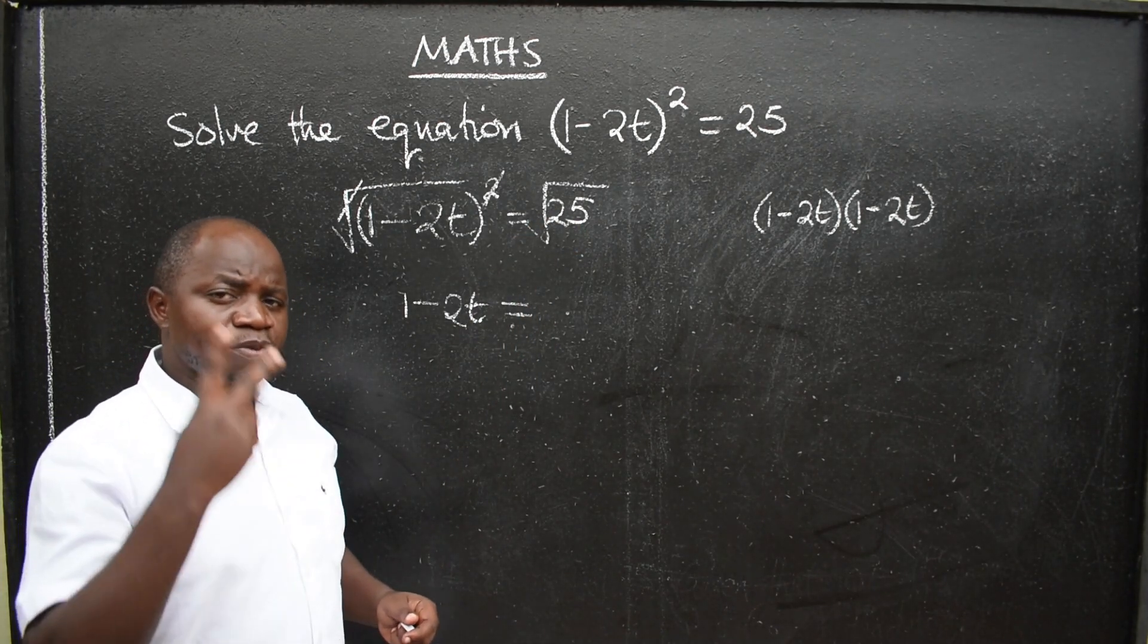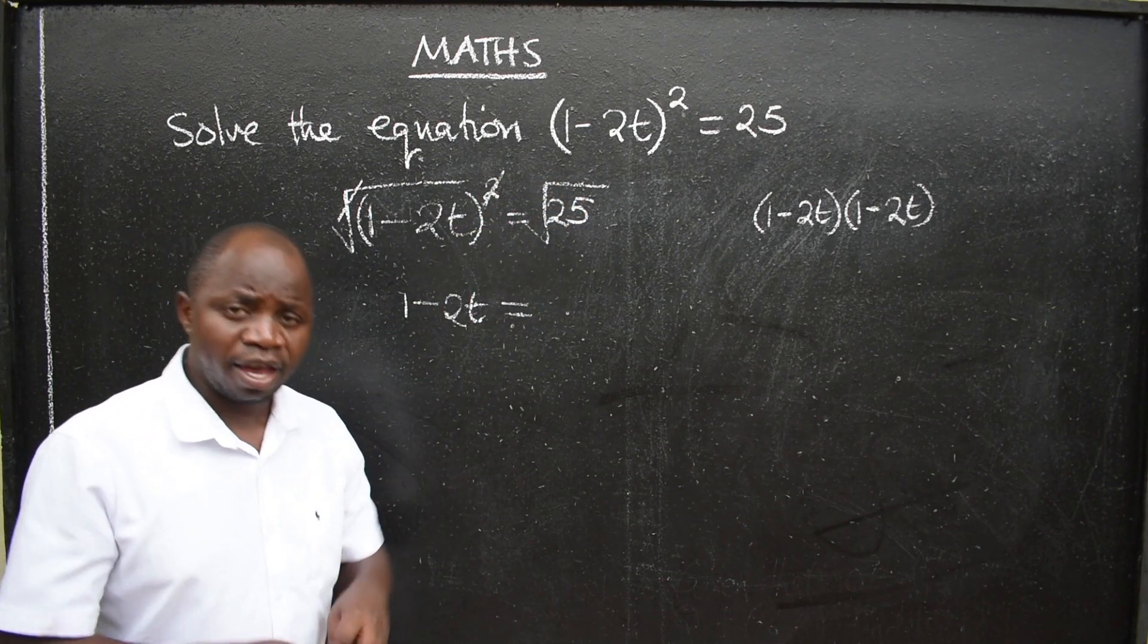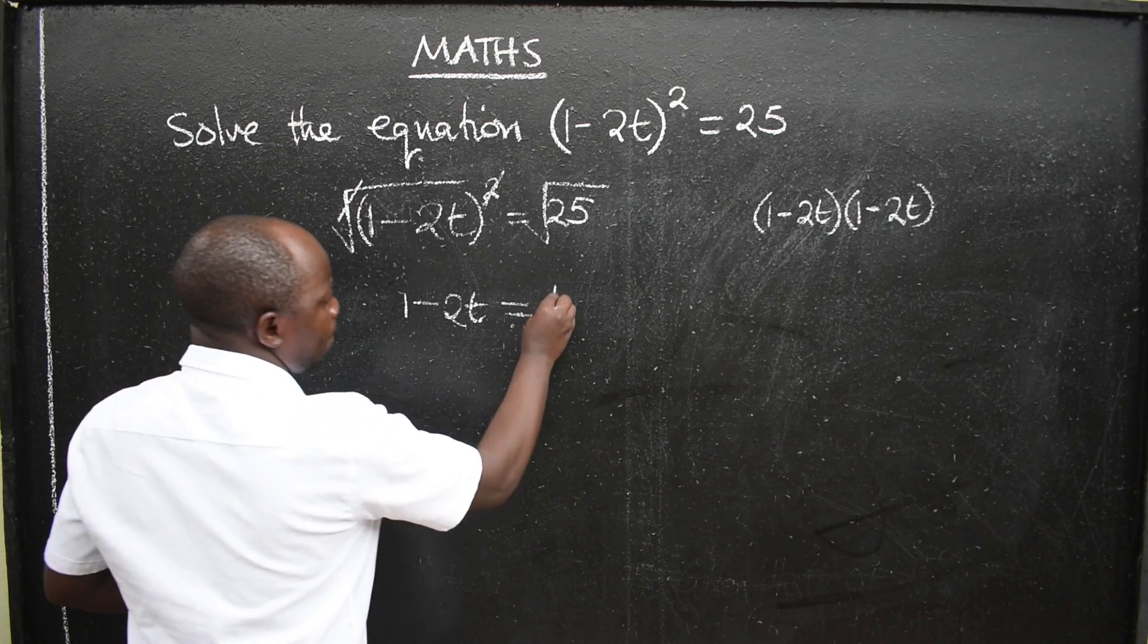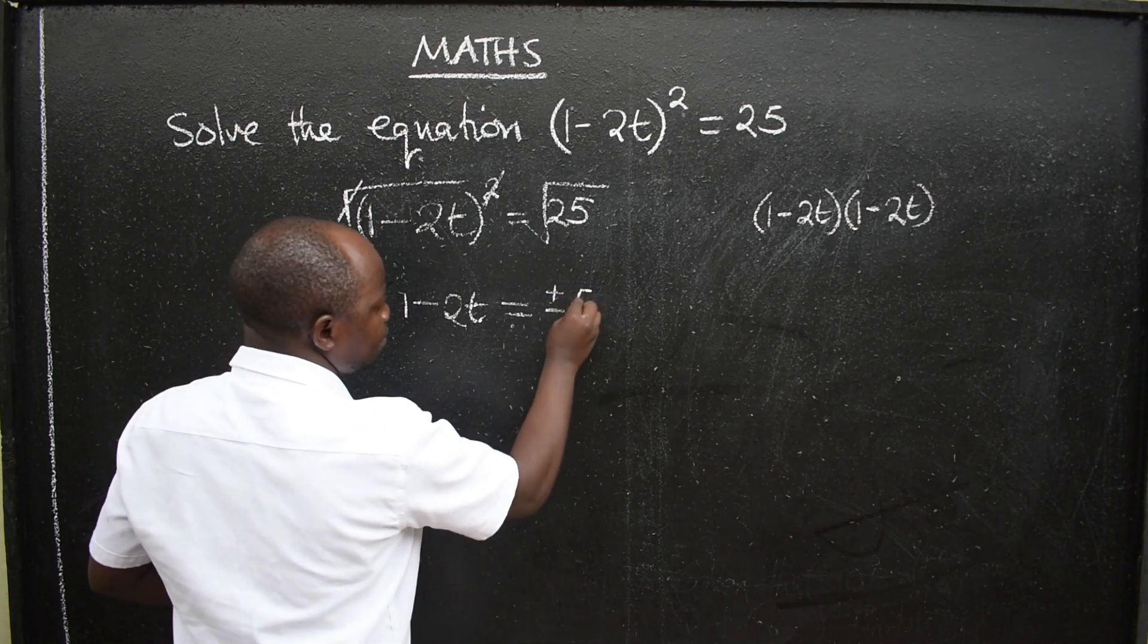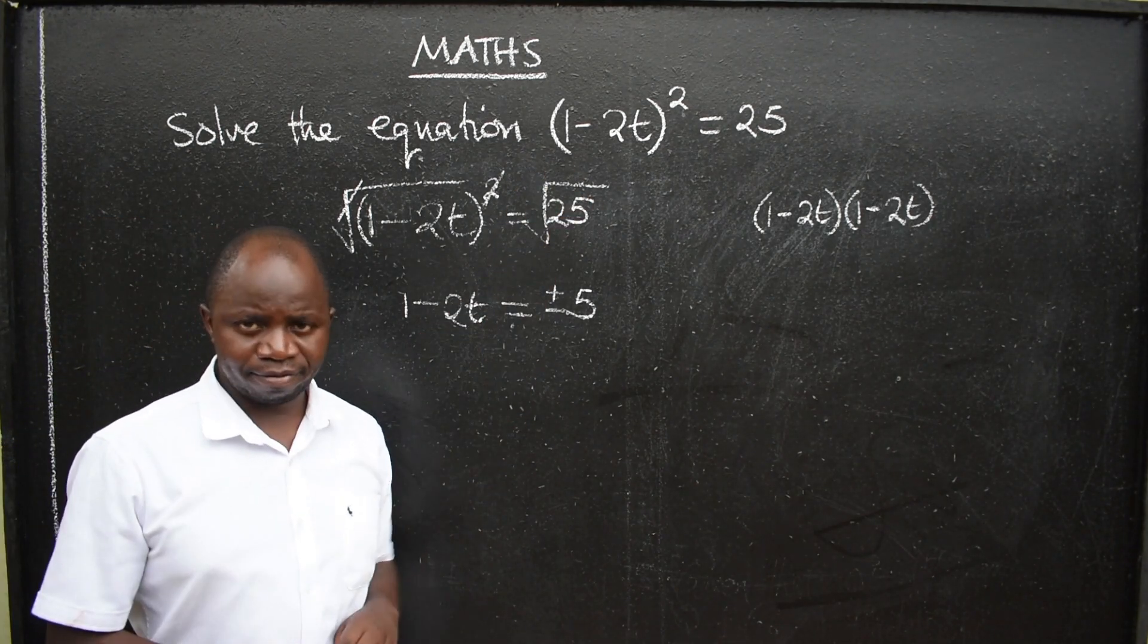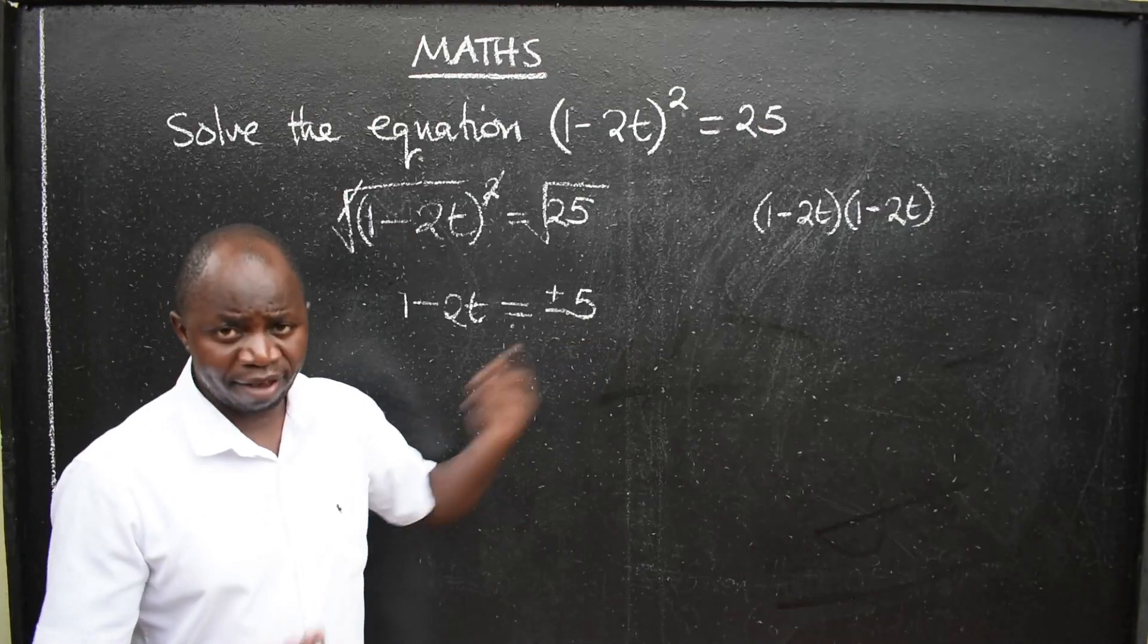25 will produce two numbers. That is the square root of 25. A positive number and a negative number. So it will produce positive and negative 5. So that is the square root of 25. It will be positive 5, it will also be negative 5.